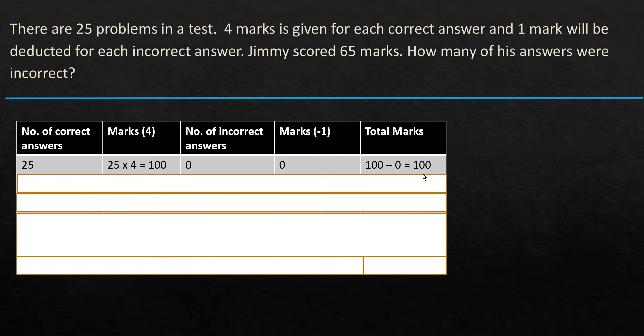Now what we are going to do is this 100—the marks that Jimmy obtained is 65 and that is less than 100. So we will reduce the number of correct answers here by 1, to 24. 24 times 4 gives 96, that's the marks obtained because of the 24 correct answers. There's one incorrect answer and because of that, one mark is deducted. So 96 minus 1 is 95, which is the total marks.